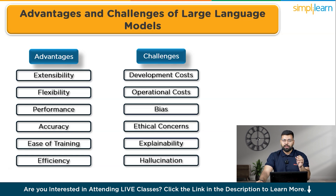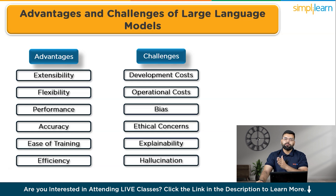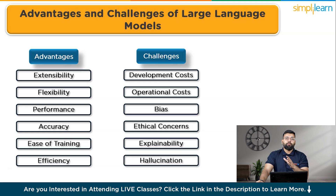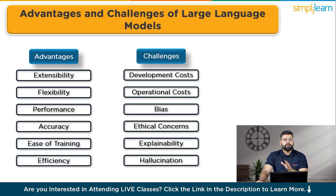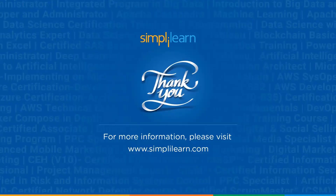The future of LLMs is very promising, with continuous improvements in accuracy, efficiency, and applications. Businesses will increasingly leverage LLMs for various tasks, enhancing productivity and innovation. In conclusion, large language models are transforming the AI landscape by understanding and generating human-like text. While they come with challenges, their potential to revolutionize various industries is immense. Stay tuned for more AI insights, and don't forget to like, share, and subscribe. If you have any doubts, comment below. Till then, stay safe and keep learning.